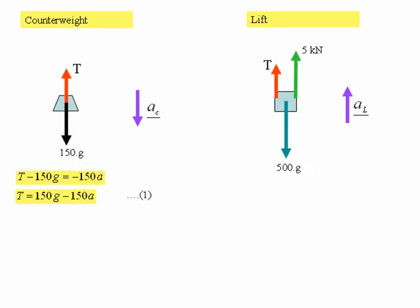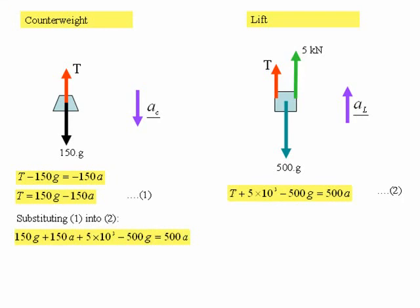We'll now consider the lift. The resultant force on the lift is T plus 5 kilonewtons minus 500G, and that is equal to 500 times A — we'll call that equation two. Substituting equation one into equation two, we get: 150G minus 150A plus 5 times 10 to the power 3 minus 500G equals 500A.